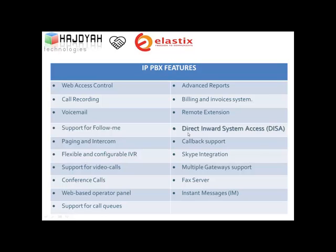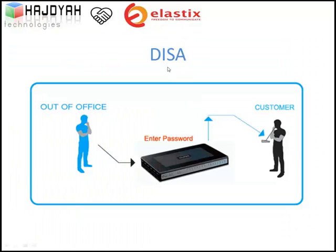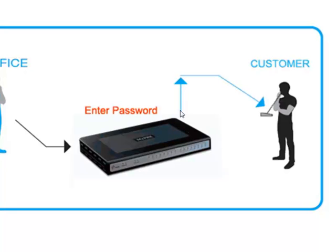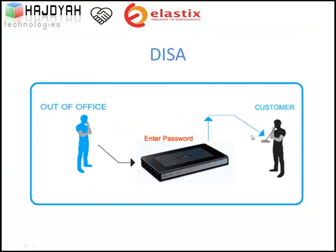Direct Inward System Access (DISA): This service allows someone calling from outside to obtain an internal system dial tone and make calls from one of the office extensions. A user out of the office calls the office number, enters the password, and then uses the office lines. This is useful when the remote user needs to use office lines with specific features like international calling.